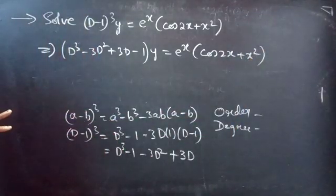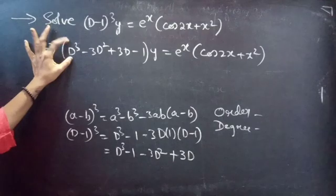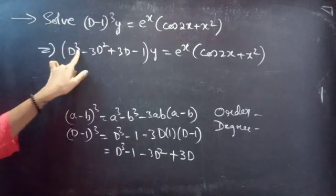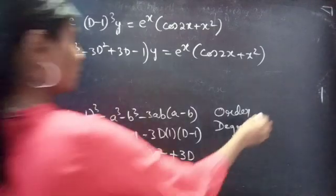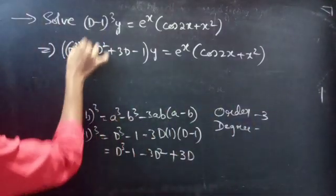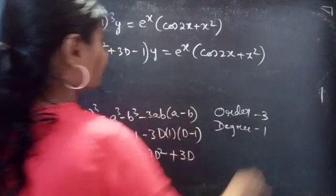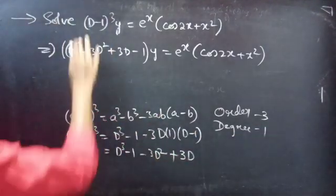Identify the highest derivative here. D cube is the highest derivative, so our order will be 3. The highest power of the highest derivative is 1, so the degree is 1.